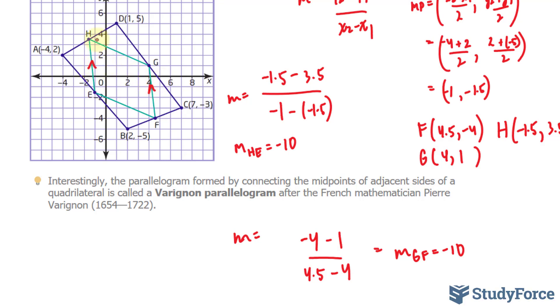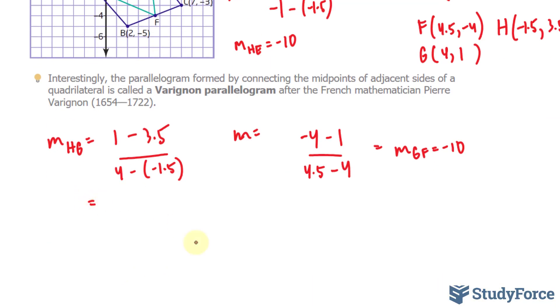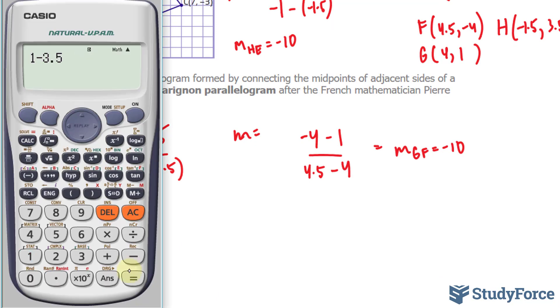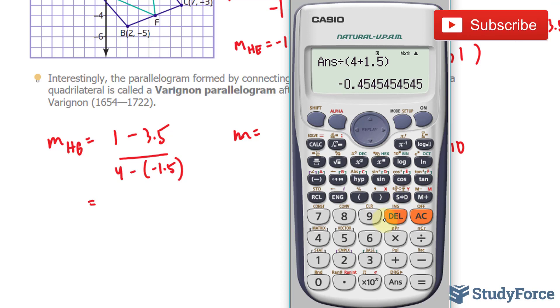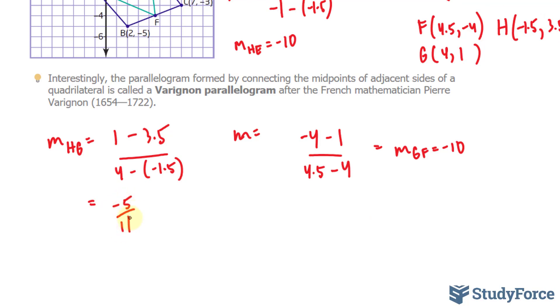Now let's do the same thing for H to G. So the slope between H and G is Y2 minus Y1. Y2 is 1 minus 3.5, 4 minus negative 1.5. Using our calculator, 1 minus 3.5, divided by 4 plus 1.5, and that's equal to approximately negative 0.45, or technically negative 5 over 11.